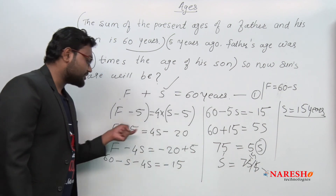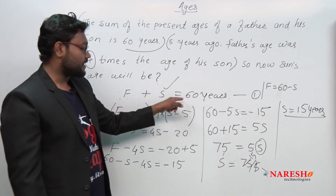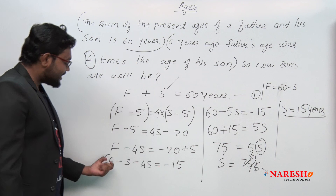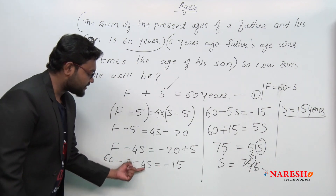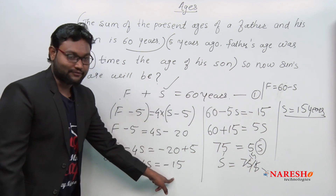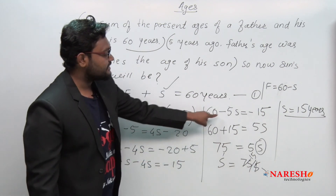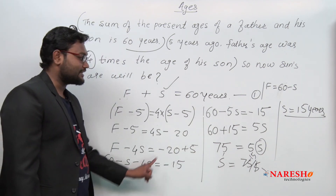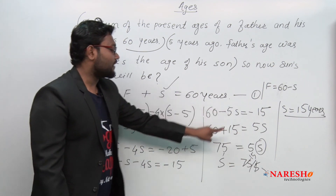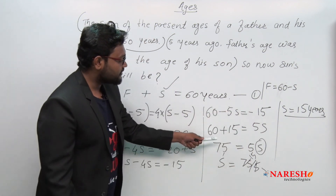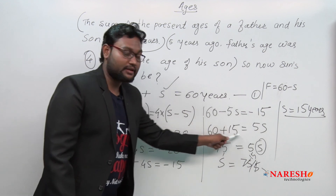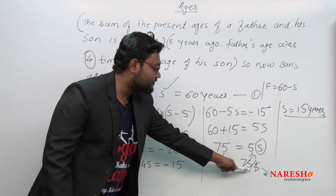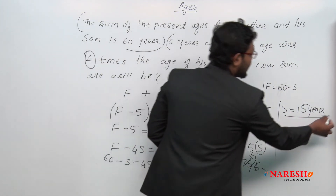Rearranging gives F minus 4S equals minus 15. We represented F as 60 minus S from the first equation, and substituted it in: 60 minus S minus 4S equals minus 15, so 60 minus 5S equals minus 15. Therefore 5S equals 75, and S equals 15. The age of the son is 15 years.